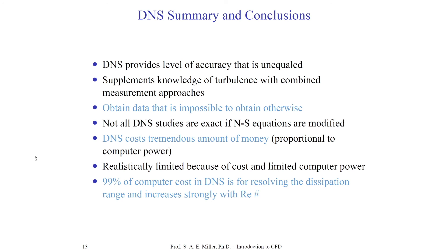It's as expensive as renting a wind tunnel and taking measurements, which might be cheaper and give you a high Reynolds number flow you actually care about. For high Reynolds number DNS, there is not enough computer power in existence to resolve the flows in a time scale smaller than our lives. Furthermore, the majority of computer power and cost will be for resolving the dissipation range, even though most of the energy resides in the largest scales of turbulence.